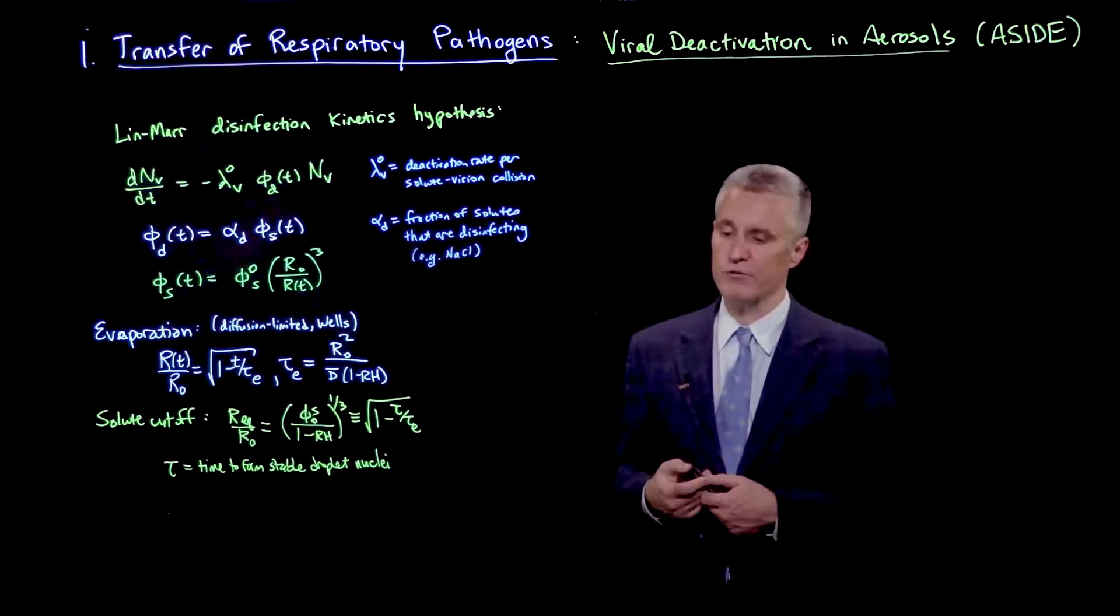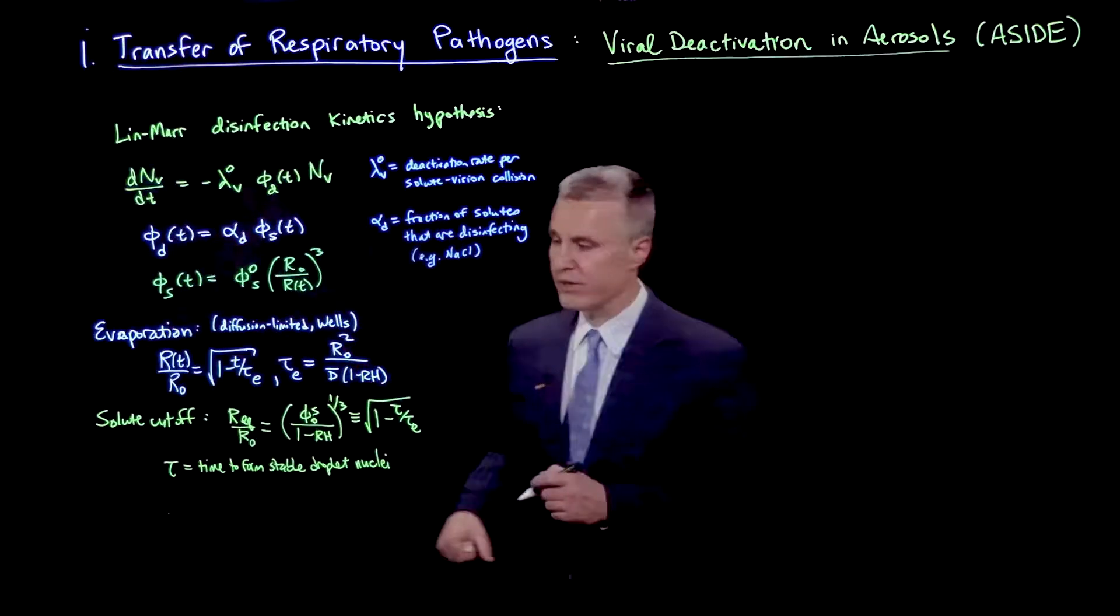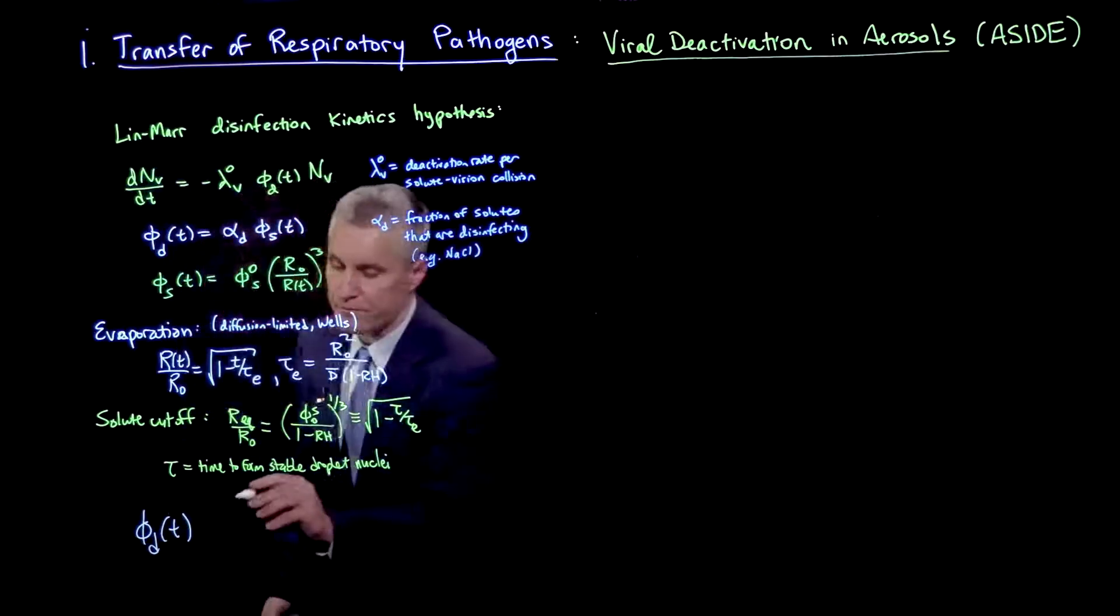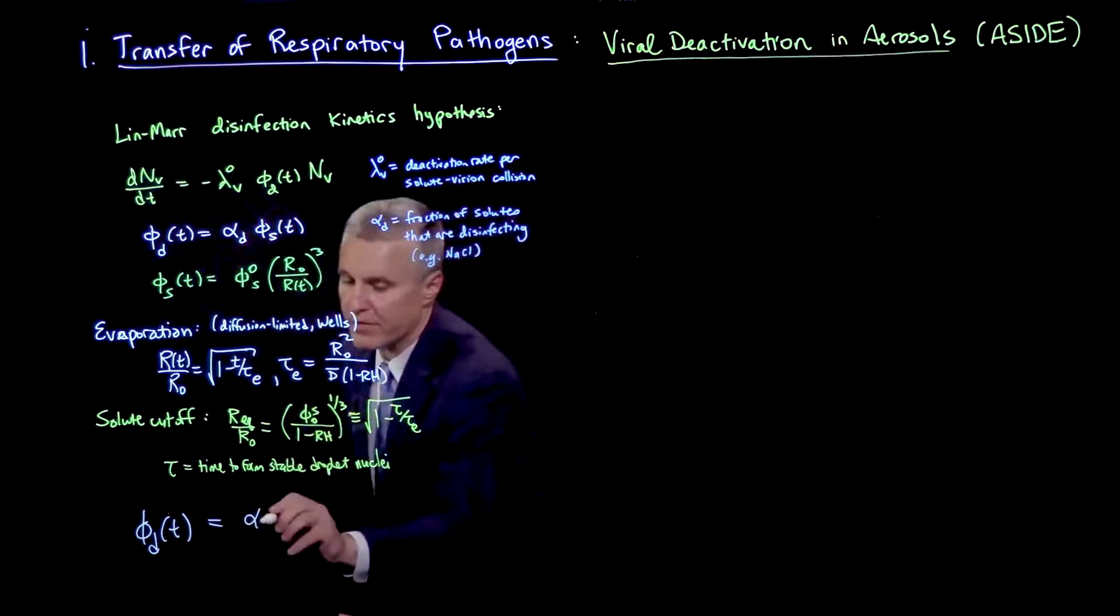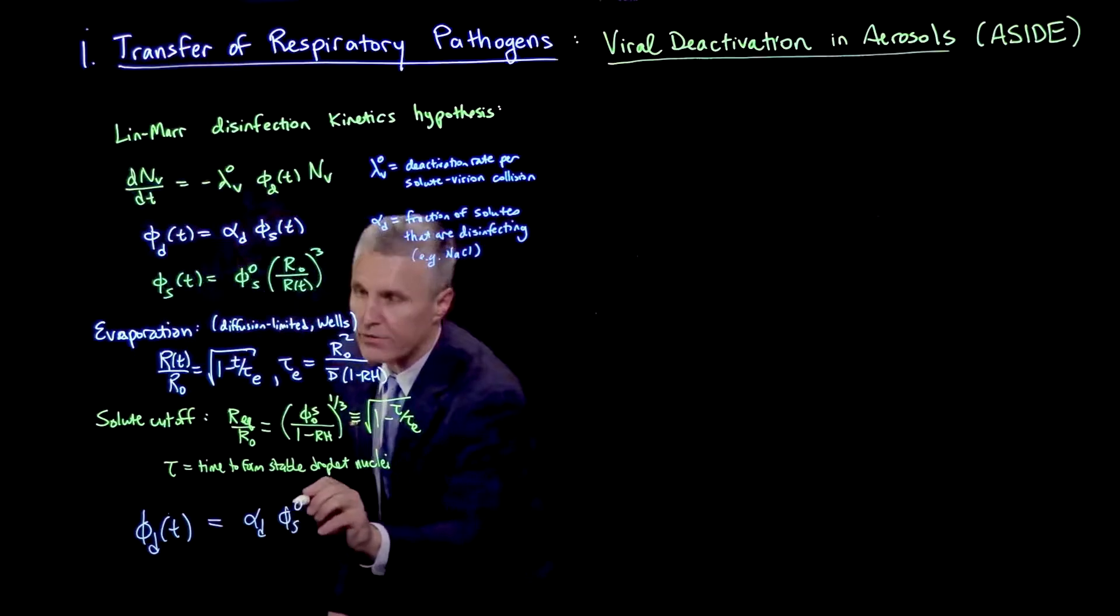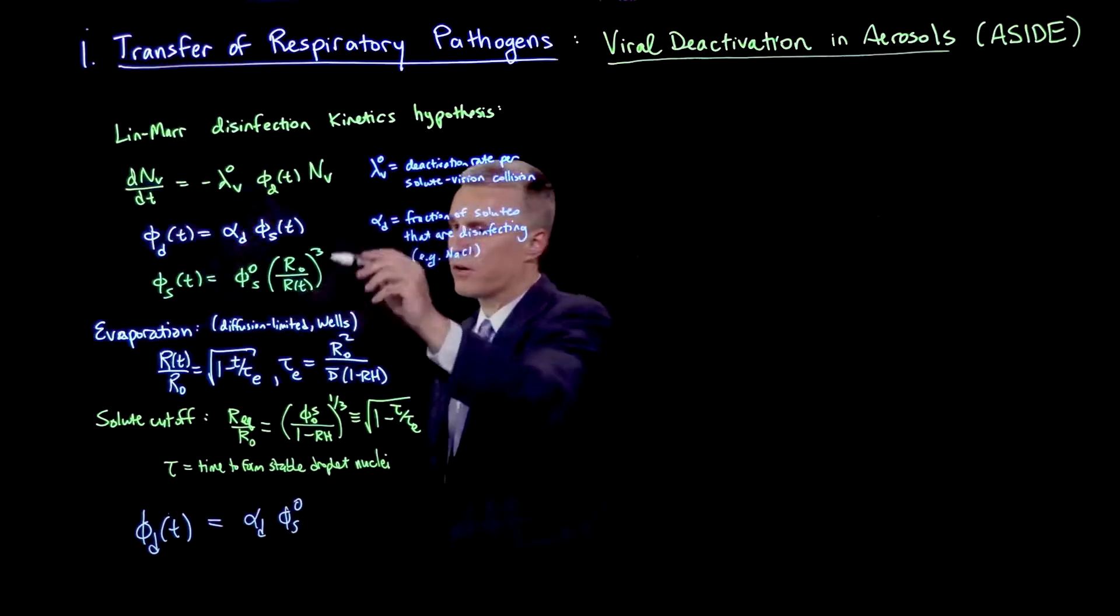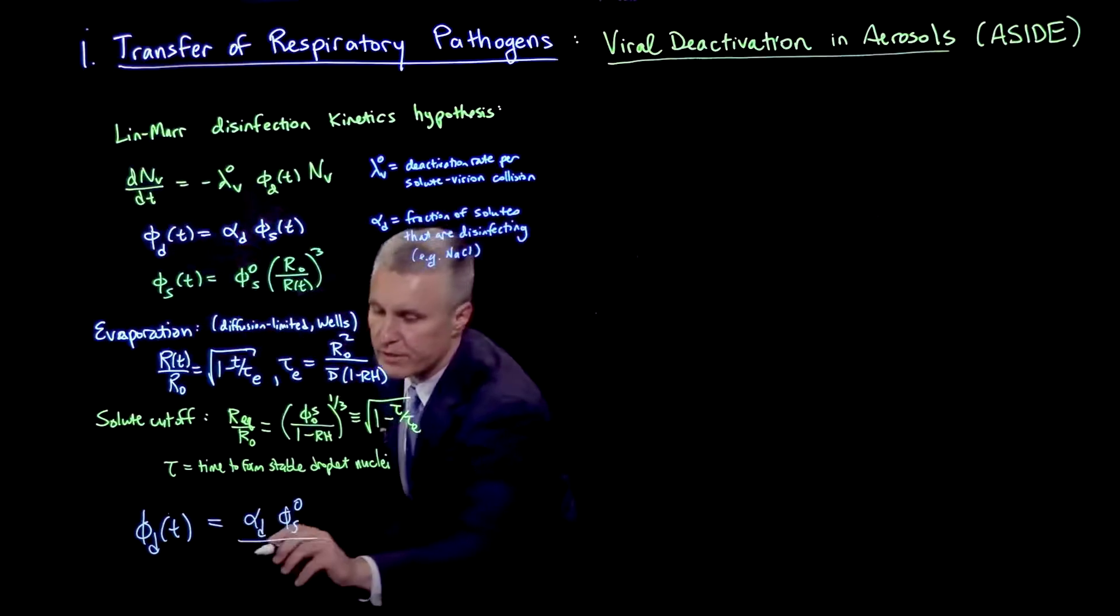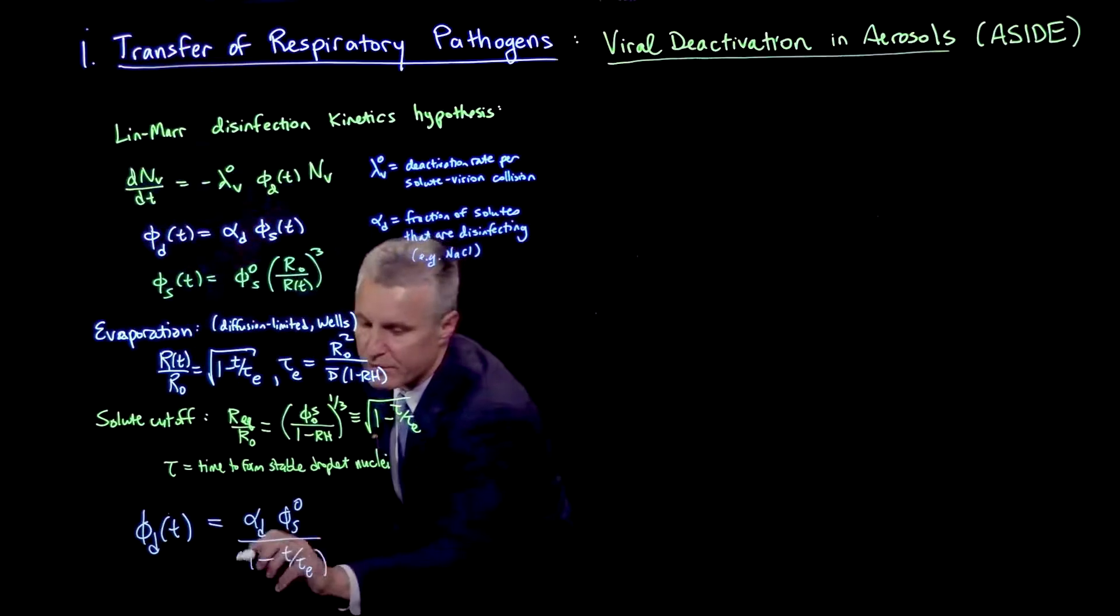Let's start combining all these equations. What is the volume fraction of disinfecting solutes, phi d of t? From this equation, it'll be alpha d times phi s of t, which is phi s0 times this ratio, r0 over r cubed. Using this expression for diffusion-limited kinetics, this would give me 1 minus t over tau e to the 3 halves.